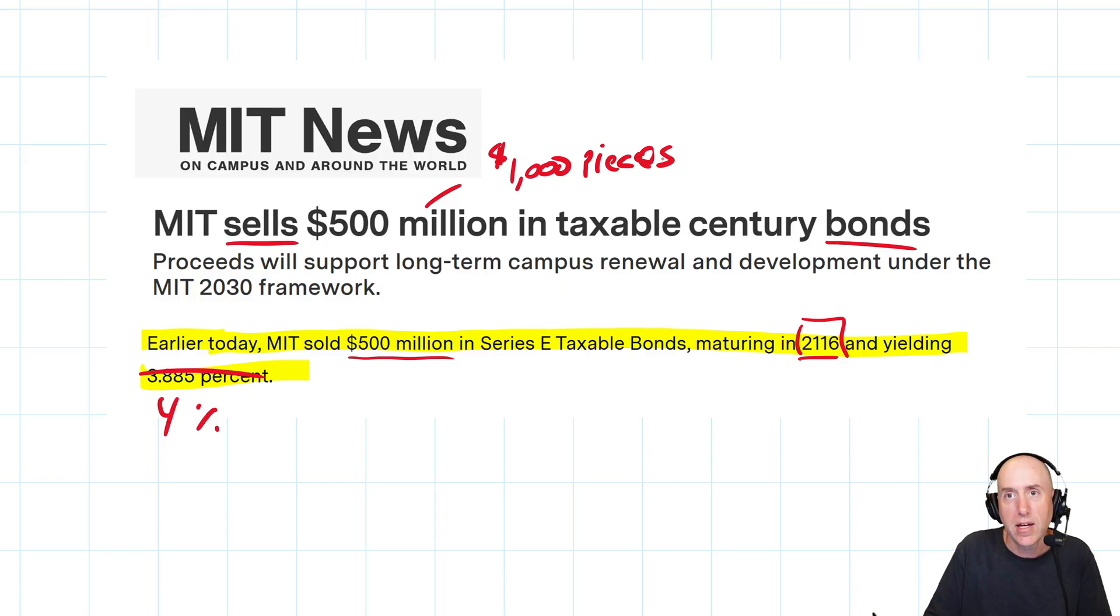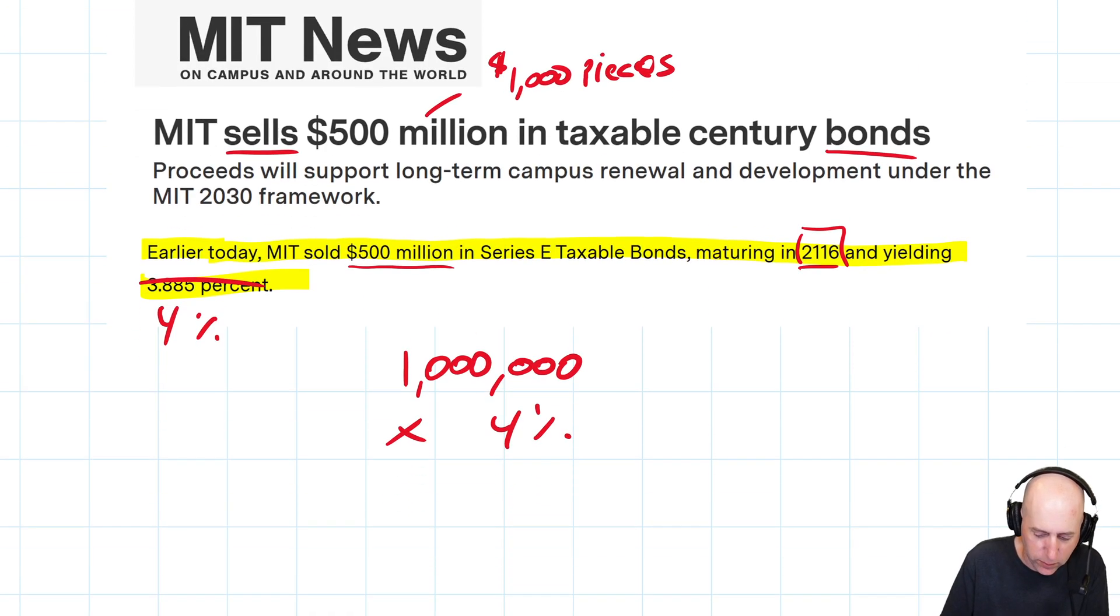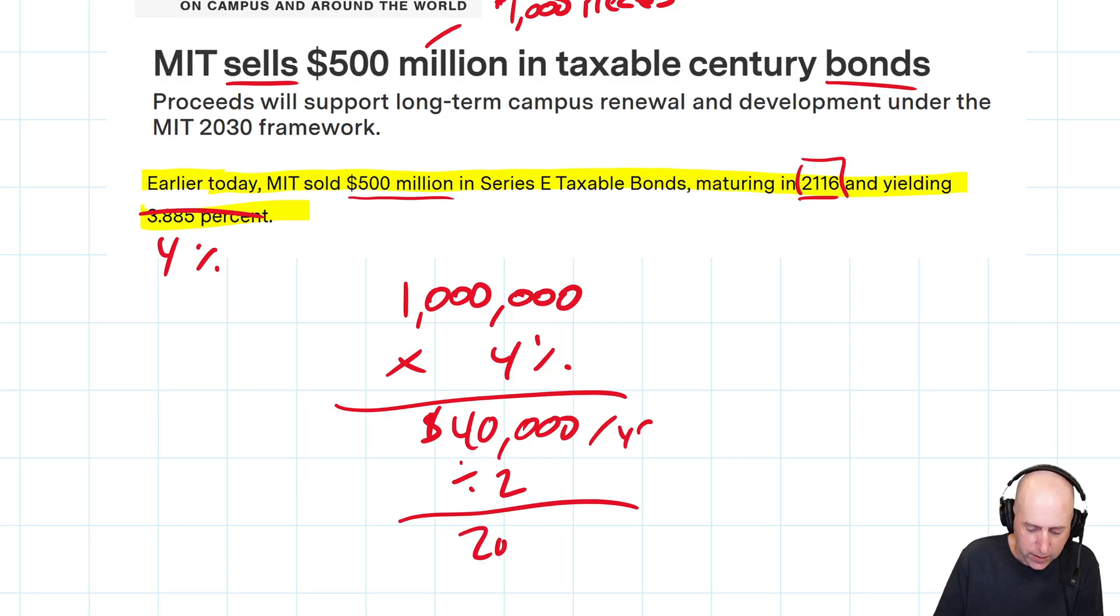They try to get somebody to invest - you give me a thousand dollars, I promise to pay you back the thousand dollars in 2116 with 4% interest. Now importantly, nobody's buying the bond if MIT doesn't promise to pay the interest on an ongoing basis. If you just wait 100 years, you're going to be dead. So MIT not only promises to pay 4% interest per year, they'll make payments every six months.